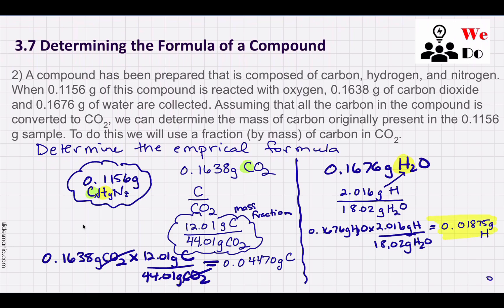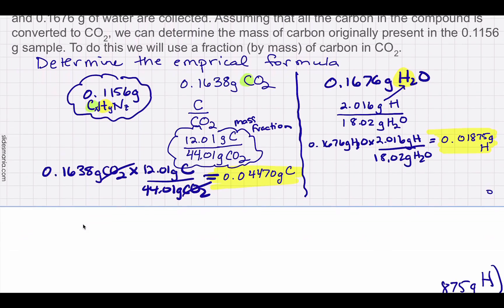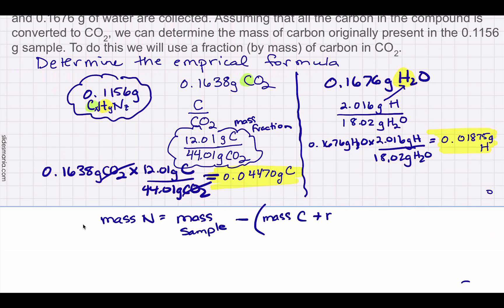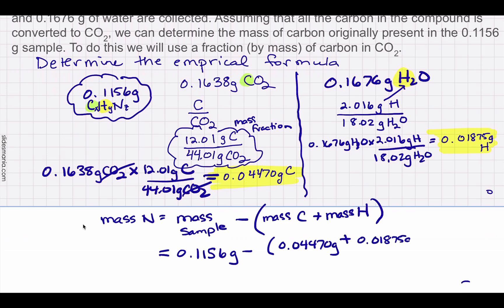Now that I have the mass of hydrogen and carbon from the sample, there's one more element to find. The mass of nitrogen equals the mass of the sample minus the mass of the carbon and the mass of the hydrogen. The sample mass is given in the question, the carbon mass and hydrogen mass were just calculated, so we can find the nitrogen mass by subtraction.